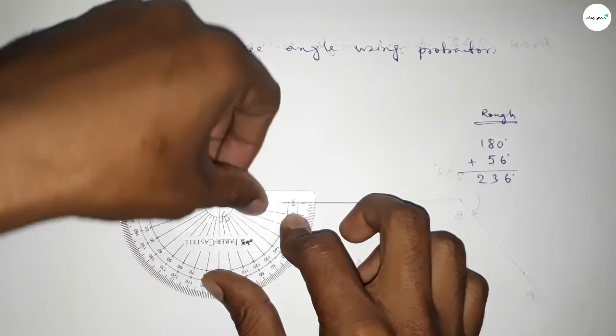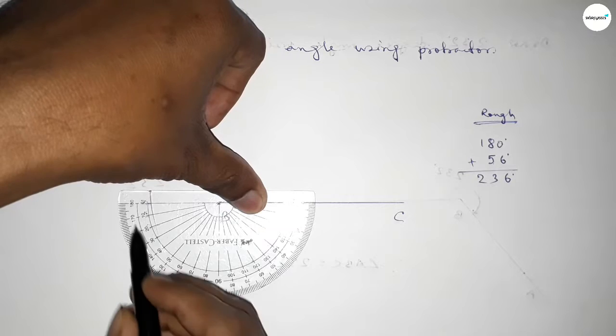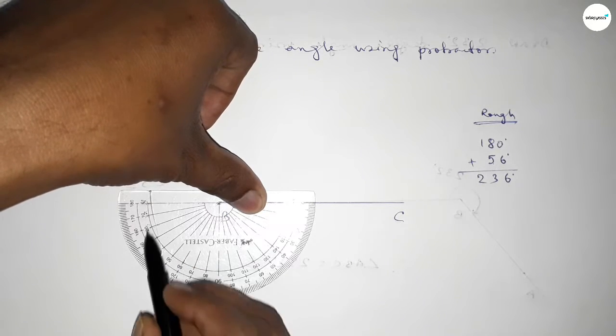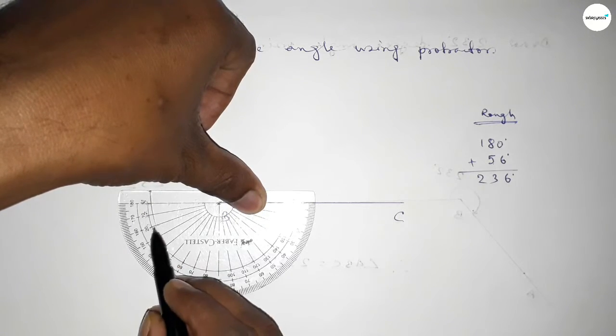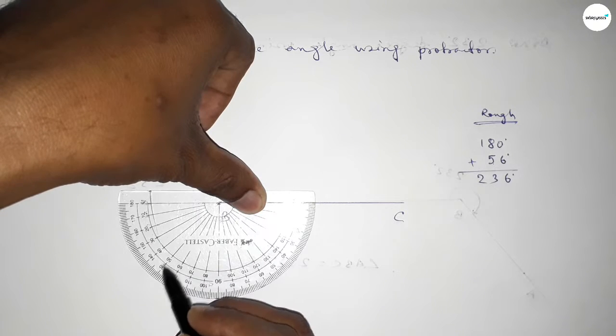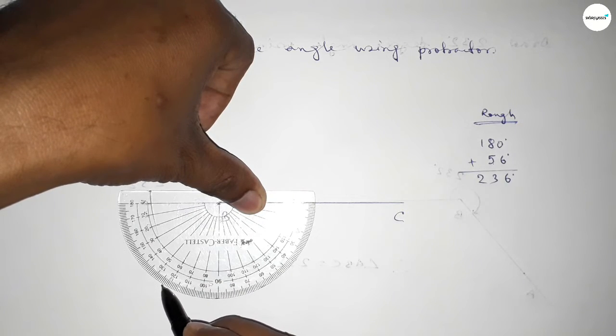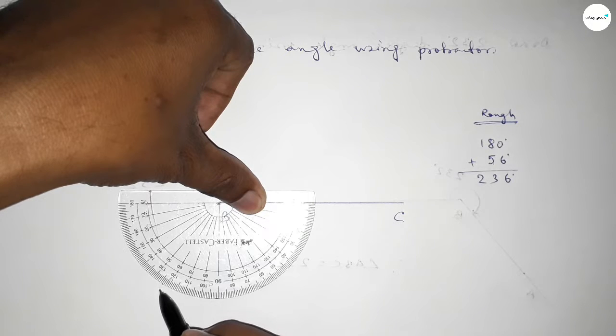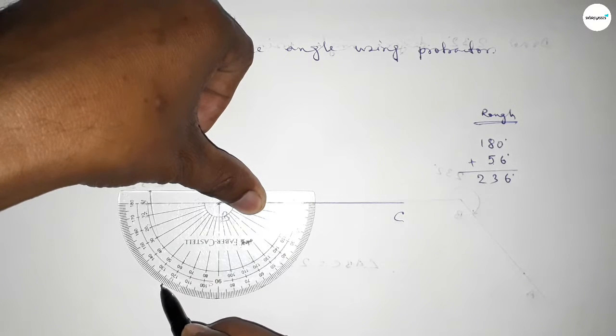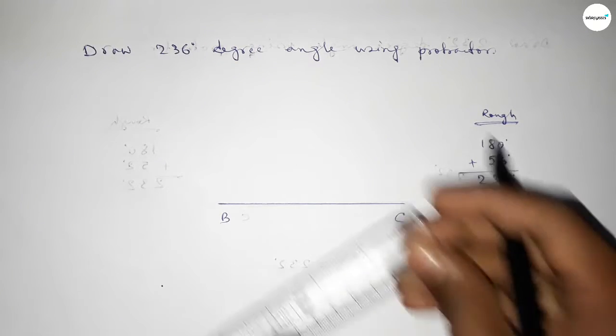Putting the protractor on point B by this way and counting 56 degree angle. This is 180 degree angle and this is also starting angle - 0, 10, 20, 30, 40, 50, 55, 56. So this is 56 degree angle. By adding 56 degree angle with 180 degrees,